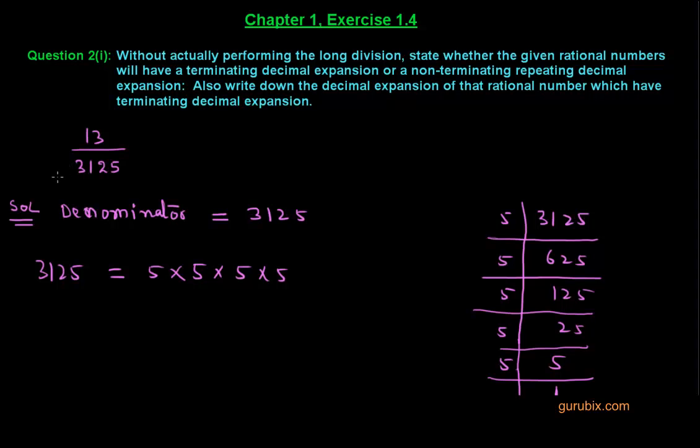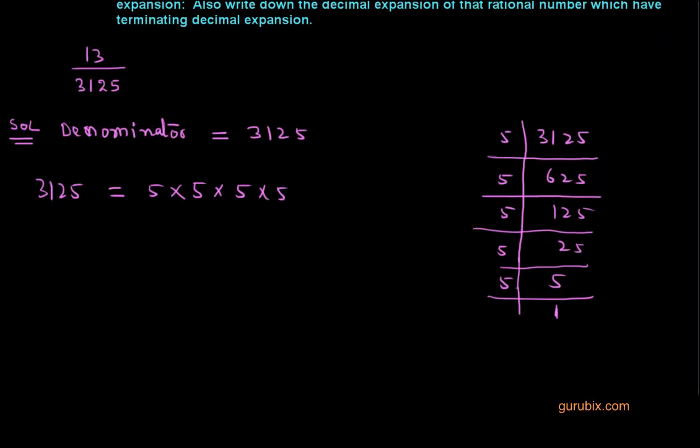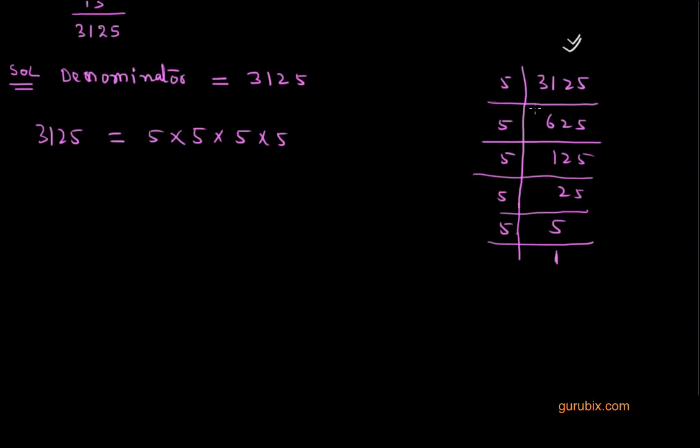So let us see how to solve this question. First of all, we shall collect the denominator which is 3125, and secondly we shall factorize it into its prime factors by using prime factorization method like this. Now we have factorized 3125 and get its prime factors.